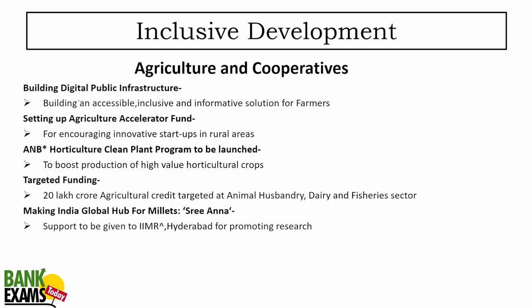Under inclusive development, the government is going to build digital public infrastructure — building accessible, inclusive and informative solutions for farmers. The government is also setting up an Agriculture Accelerator Fund to help startups bring innovation in the agriculture sector. A Horticulture Clean Plant Program is to be launched. The targeted funding towards the agriculture sector is 20 lakh crores — a credit target for animal husbandry, dairy and fishery sectors. That number is very important.